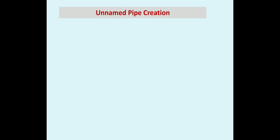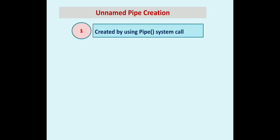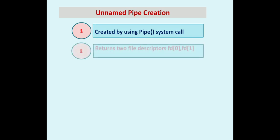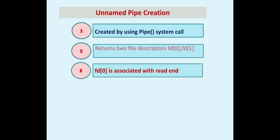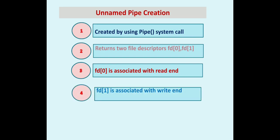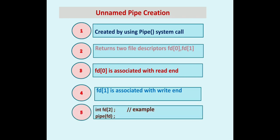There are two types of pipes: unnamed and named pipes. In this video we will concentrate on unnamed pipes. Unnamed pipes are created using the pipe() system call. After creating an unnamed pipe, it returns two file descriptors: file descriptor 0 and file descriptor 1. File descriptor 0 is associated with the read end of the pipe and file descriptor 1 is associated with the write end of the pipe.